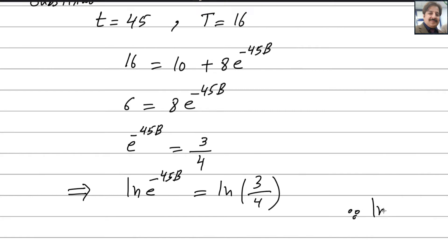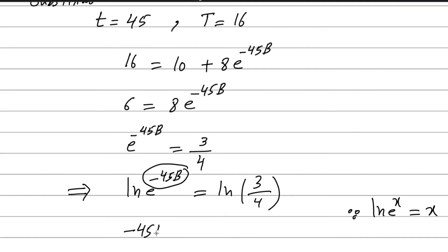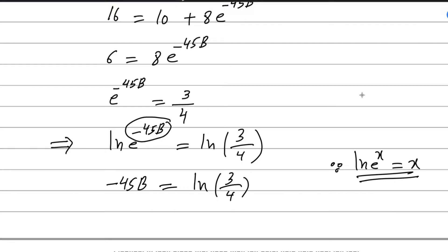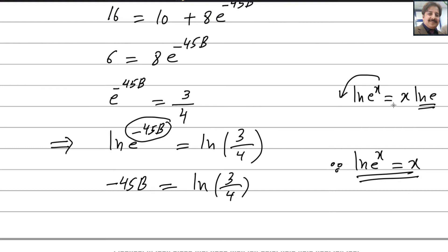The formula for ln(e to the power x) is always equal to x. This is because using the power rule in logarithms, the power multiplies down, and ln(e) equals 1. So the left-hand side becomes minus 45B equals ln(3 over 4). Therefore, the value of B is minus 1 over 45 times ln(3 over 4).